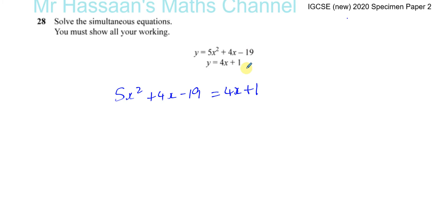Another way they could word this question, they could tell you to find the points at which this line and this curve intersect. They intersect where they're equal to each other. So if they're both in terms of y, you can equate them to each other and then solve.